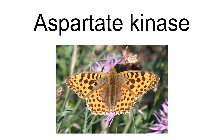Aspartate kinase, or aspartokinase (AK), is an enzyme that catalyzes the phosphorylation of the amino acid aspartate. This reaction is the first step in the biosynthesis of three other amino acids — methionine, lysine, and threonine — known as the aspartate family.